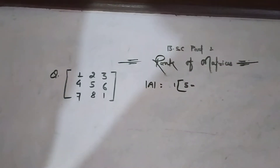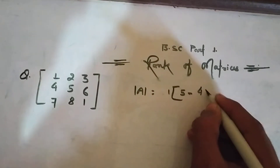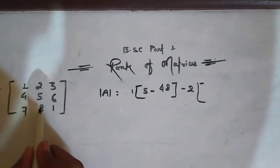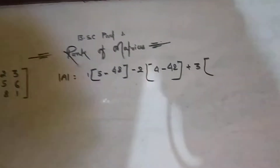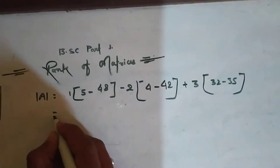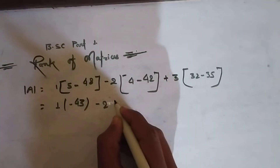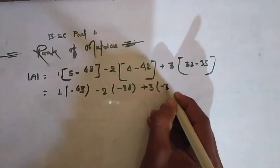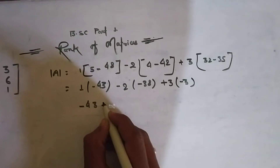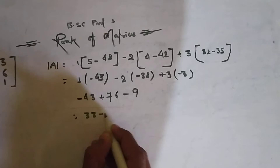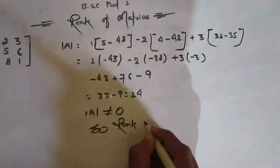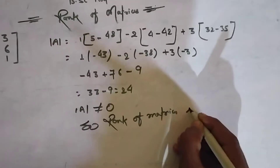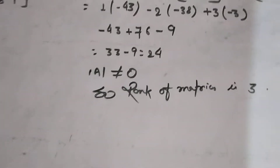Hi, today we will learn how to solve rank of matrix. The question is a 3×3 matrix. After expanding the determinant — 1×(5−48) − 2×(4−42) + 3×(32−35) and the second row terms — the result gives us the magnitude of A equal to 0. So the rank of the matrix is not 3 here.